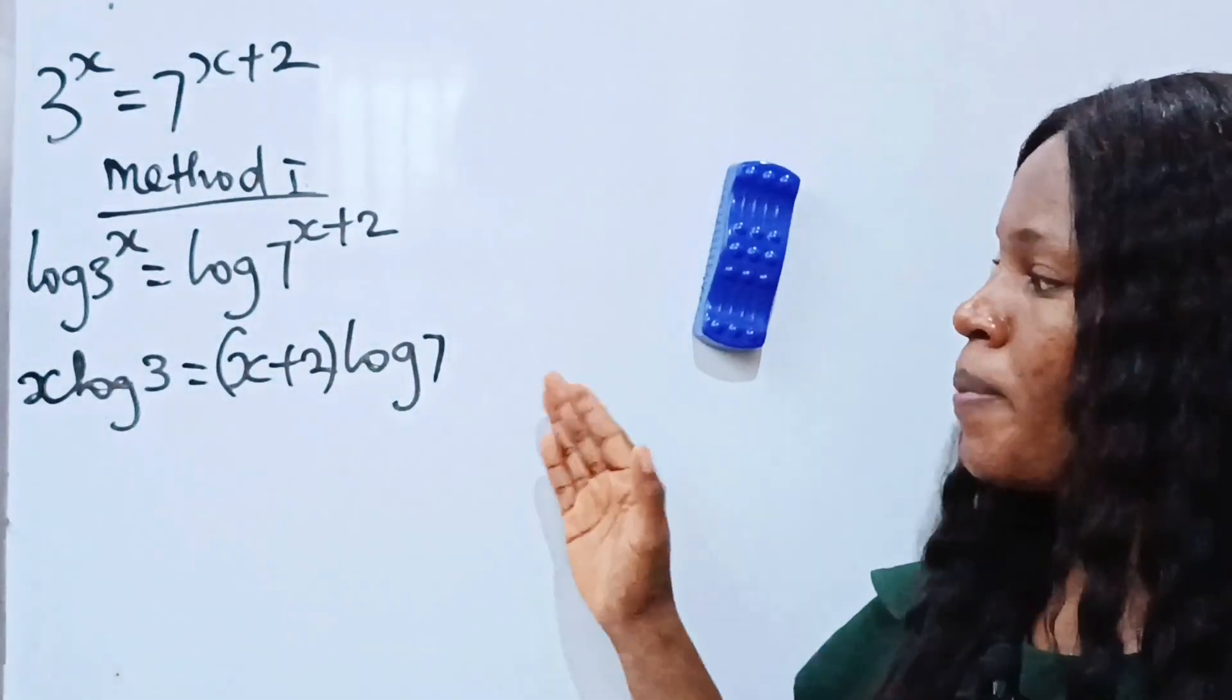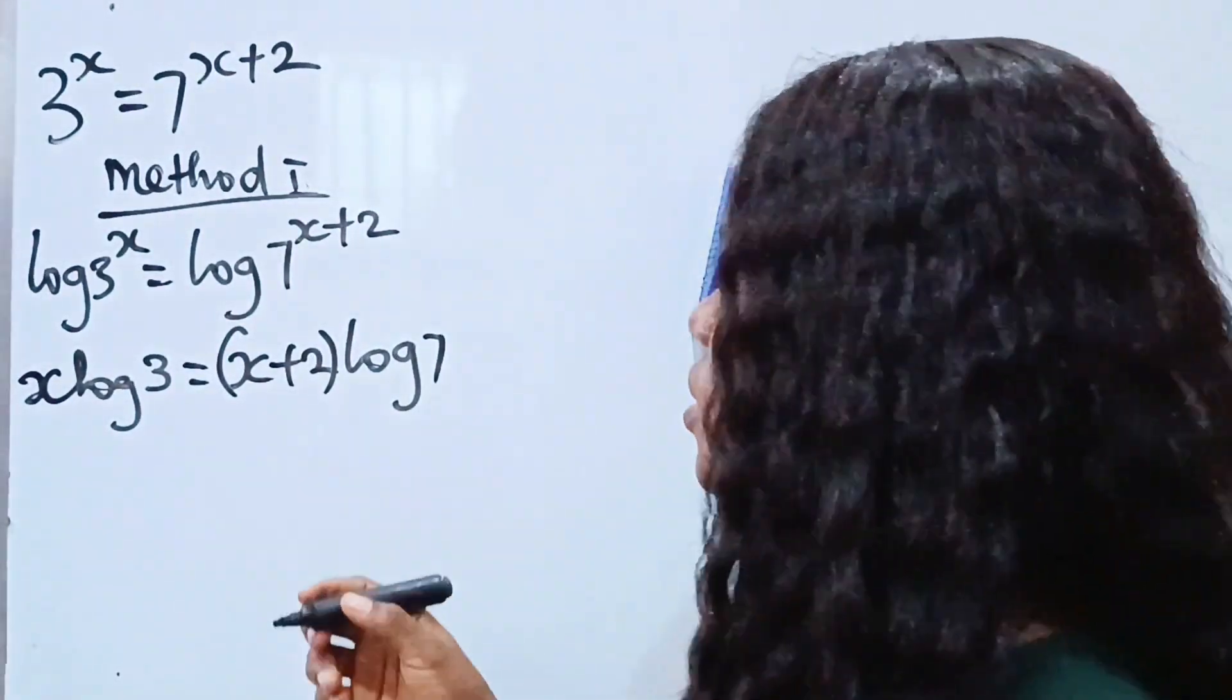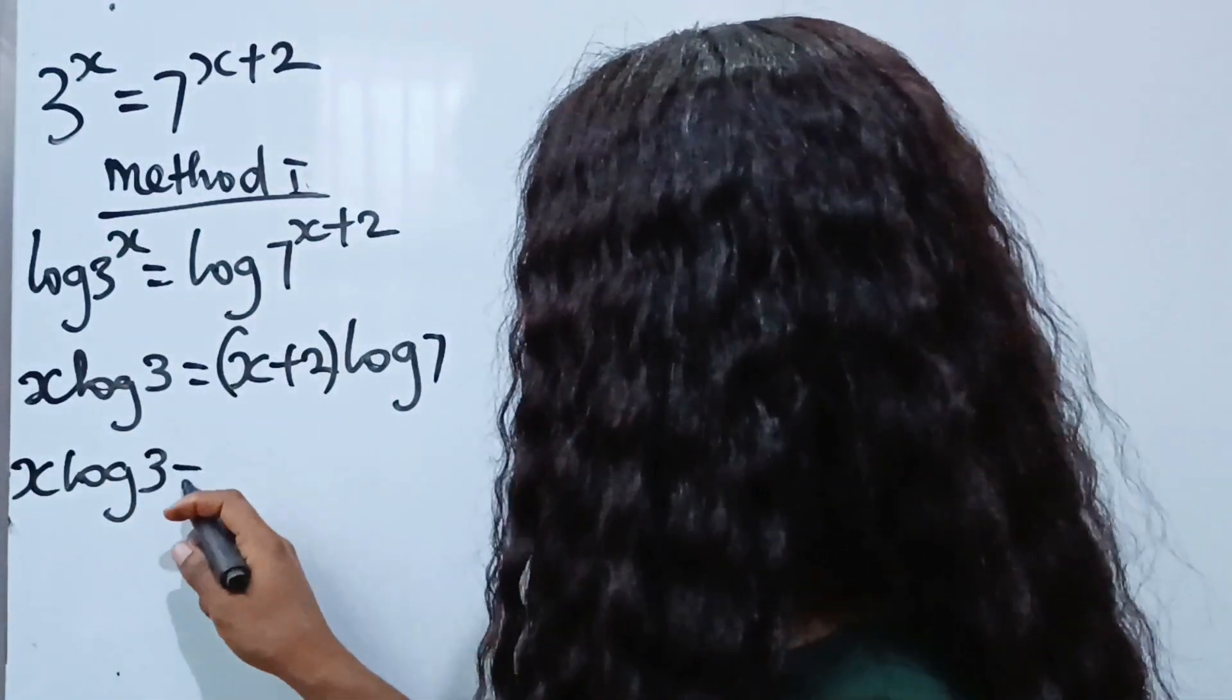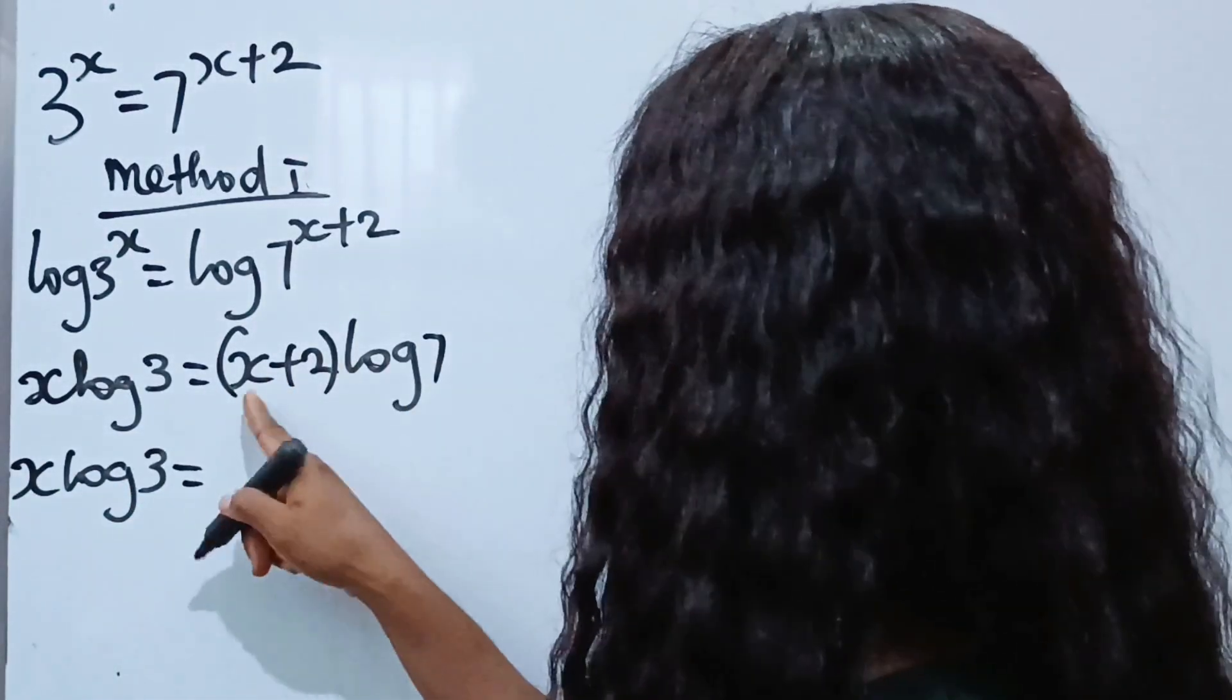Now we are going to expand this. So to do that, we have x multiplied by log 3 equals log 7 times x will give us x log 7